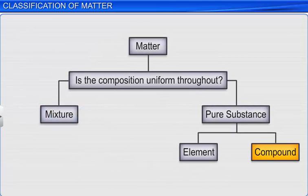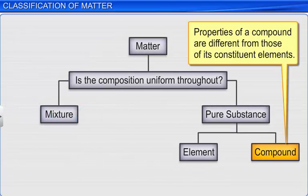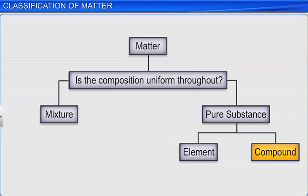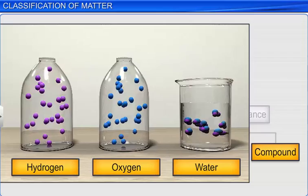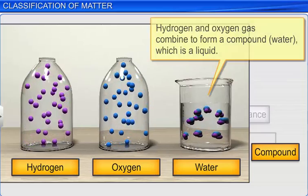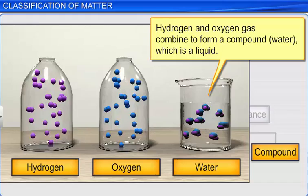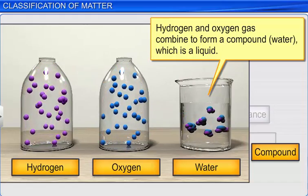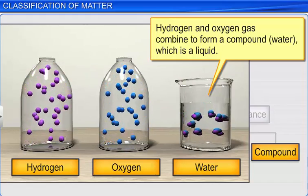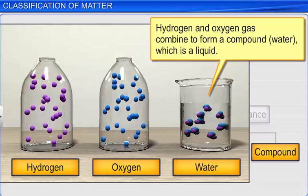Also remember that the properties of a compound are different from those of its constituent elements. For example, the elements hydrogen and oxygen, being gaseous in nature, combine to form a compound, water, which is a liquid.